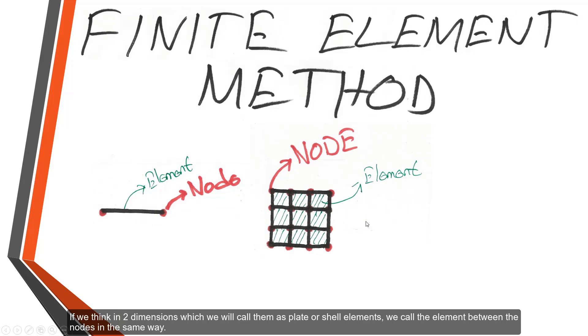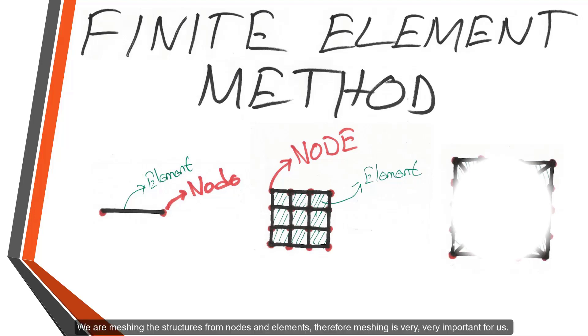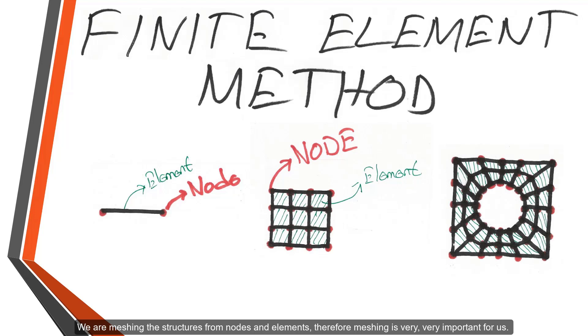If we think two dimensions, which we call them as plate or shell elements, we call the element between the nodes in the same way. We are meshing the structures from nodes and elements. Therefore, the meshing is very very important for us.